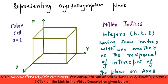So let's understand what are these Miller indices, h, k, l, which represent a particular crystallographic plane. Your Miller indices are the integers h, k, l, which have the same ratios with one another as the reciprocal of intercepts of the plane on the axis.